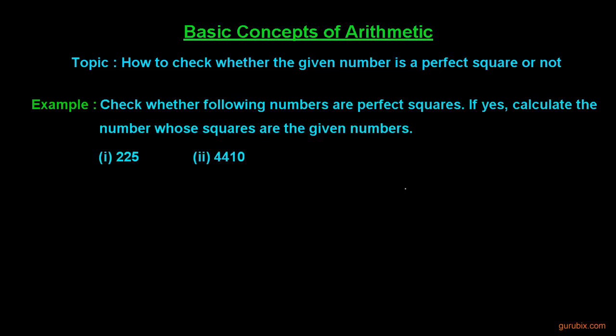The example says check whether the following numbers are perfect squares. If yes, calculate the number whose squares are these given numbers. And we are given two numbers. First is 225 and second is 4410.